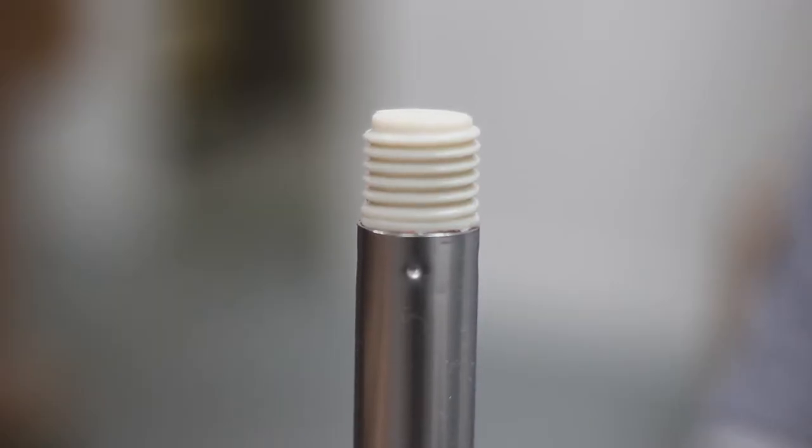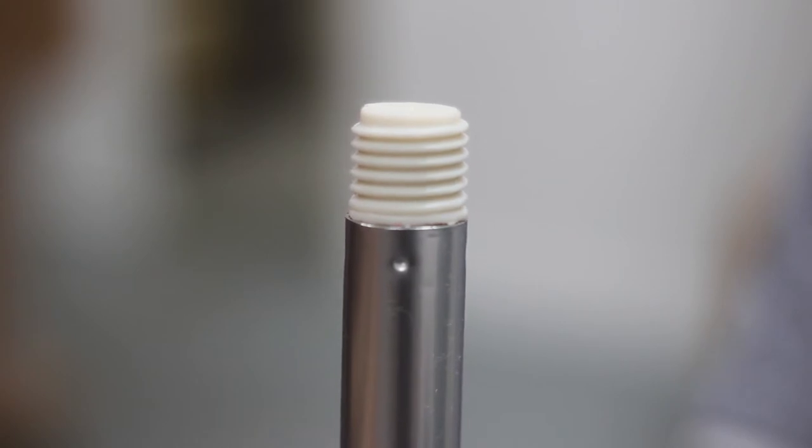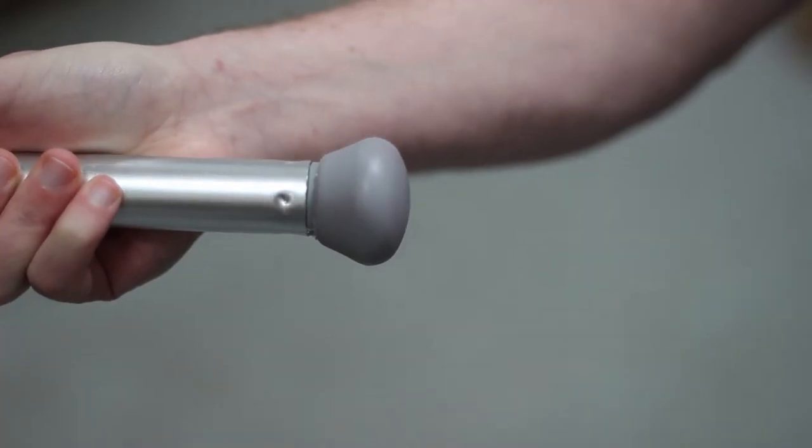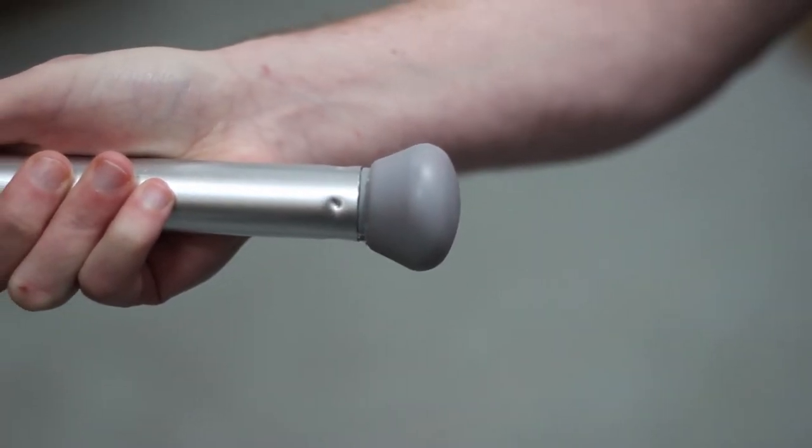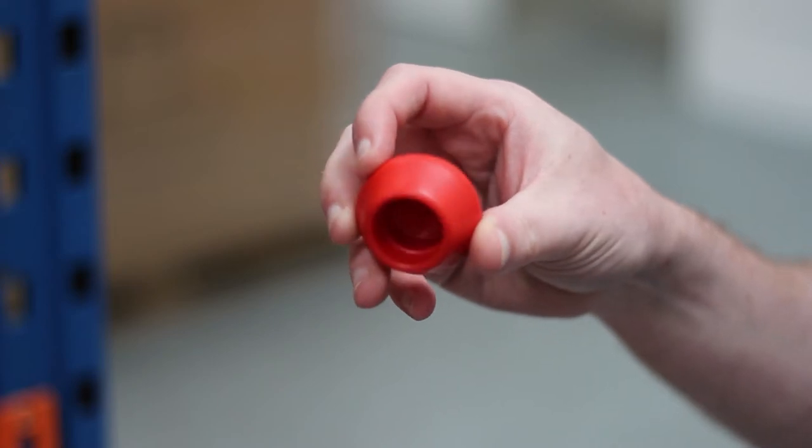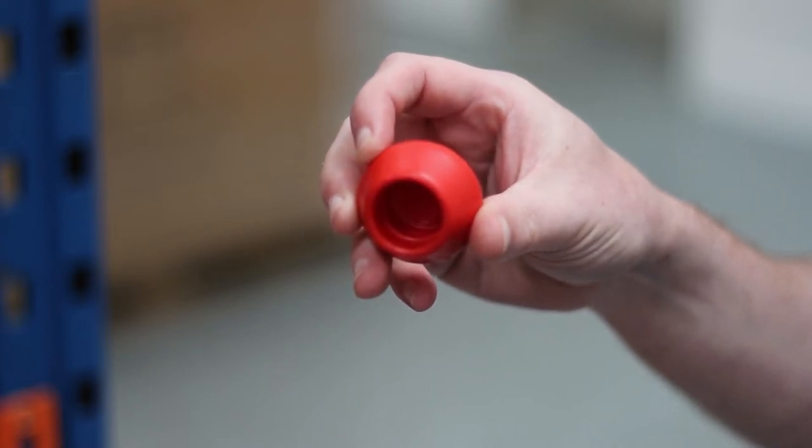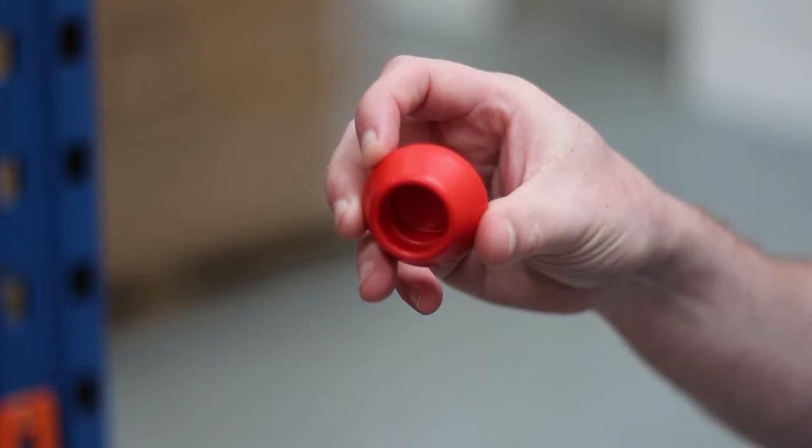You'll notice that one end of the handle has a thread on it and the other has a grey stopper. The grey stopper can be removed and exchanged for the one which matches the color of the head supplied.